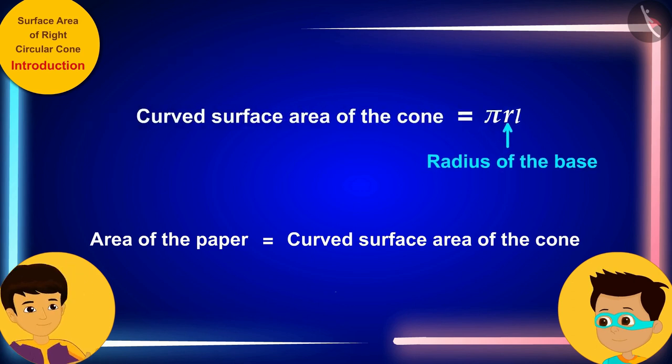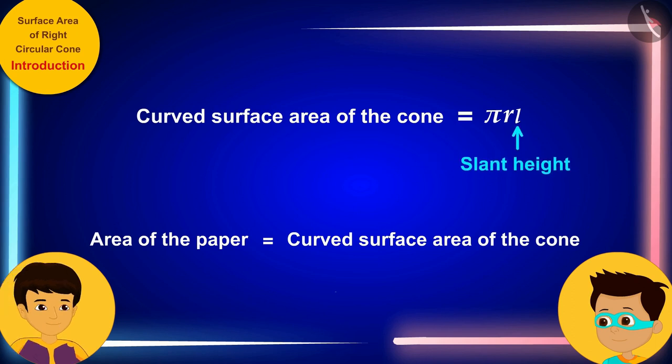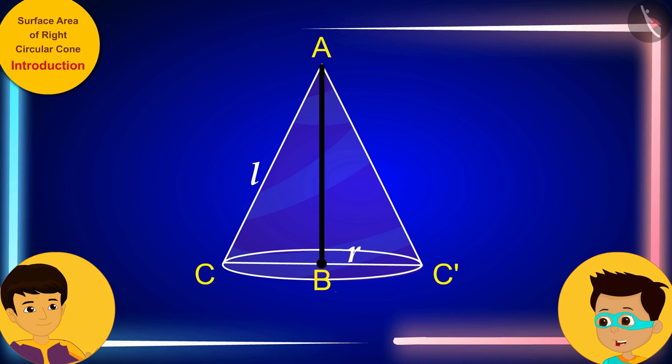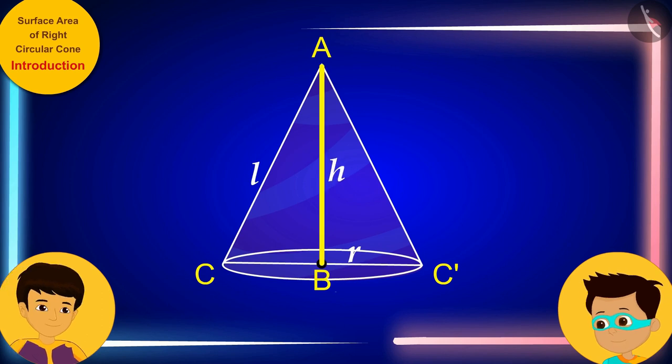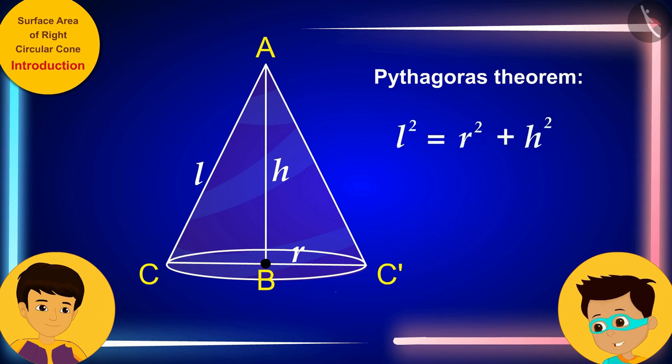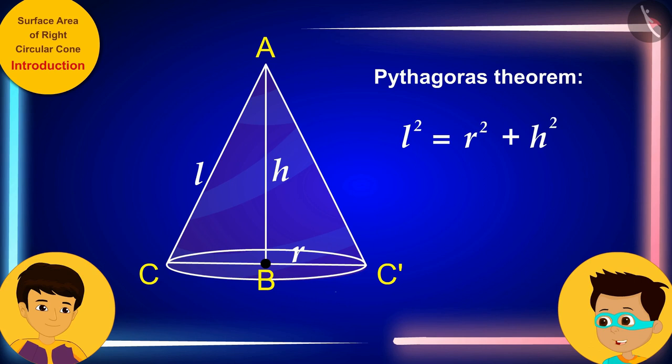And L is the slant height of the cone. And look, if we consider the height of the cone as h, then from the Pythagoras theorem, we can see that we can write the slant height of the cone in this way.